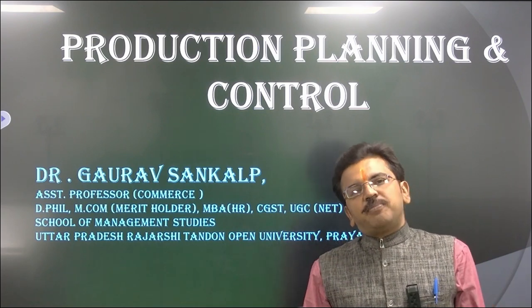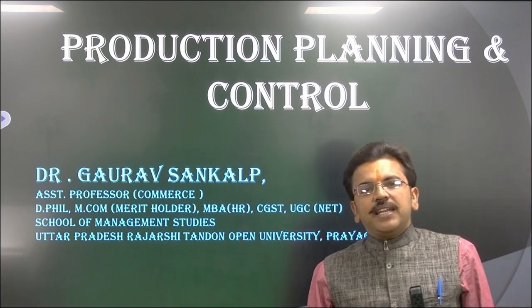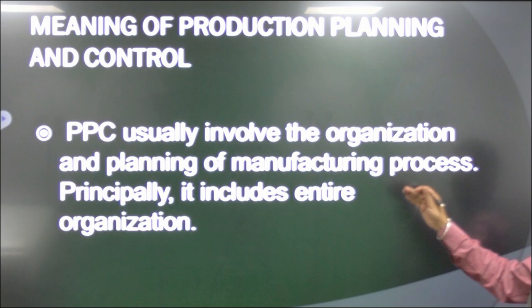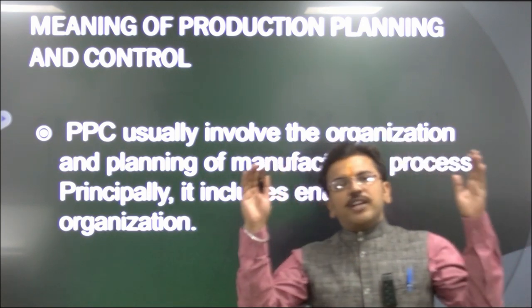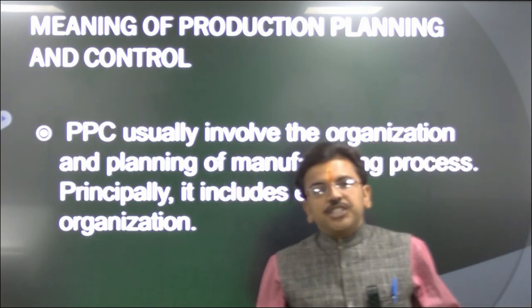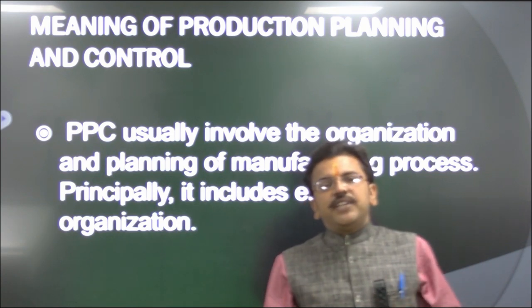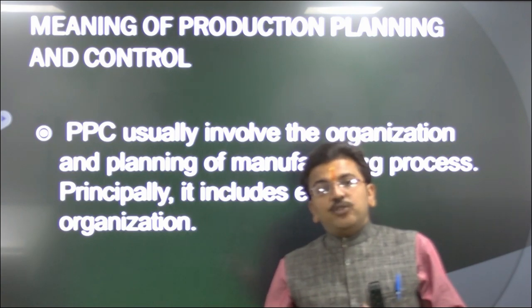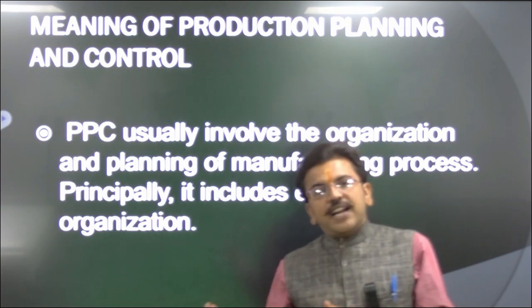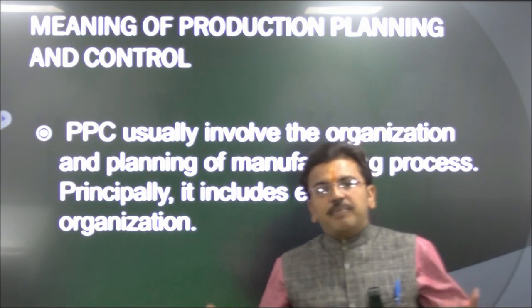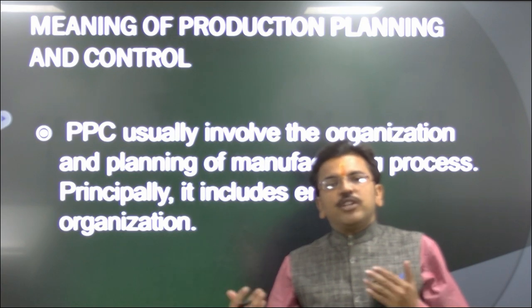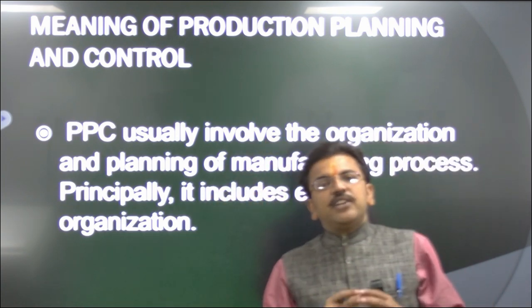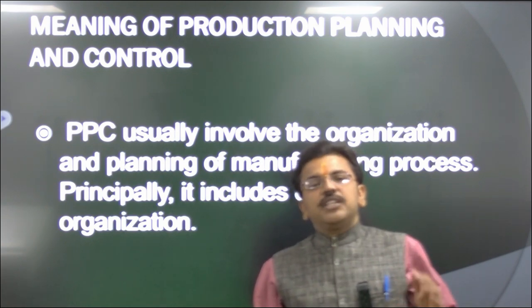In Production Management today we are going to explore a key topic that is known as Production Planning and Control. Production Planning and Control usually involves the organization and planning of the manufacturing process — principally it includes the entire organization. For production activity you require Finance, because all the material you are going to earn is dependent on the financial process. You also require proper human resources who can convert raw material into final product, a marketing department to do sales promotion, and ultimately all the profit depends upon the production, its control, and its planning.